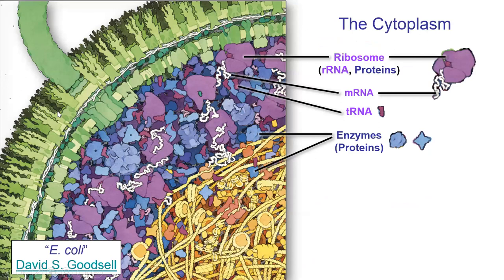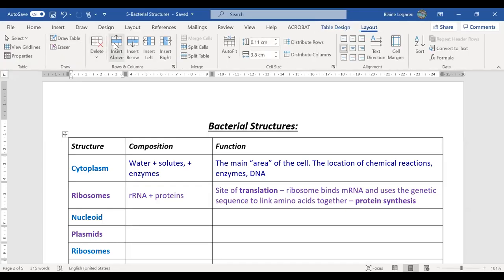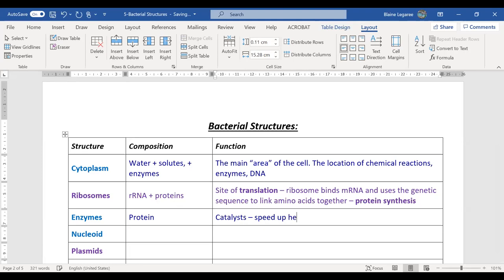What else do we have here? We have enzymes. We're going to talk about enzymes later on in the semester too. Enzymes are biological catalysts — they perform chemical reactions. They are made out of protein and they speed up chemical reactions. Hopefully you knew that one.